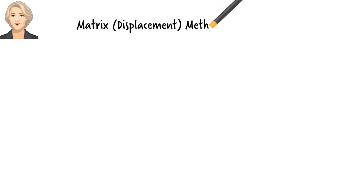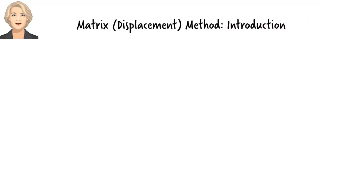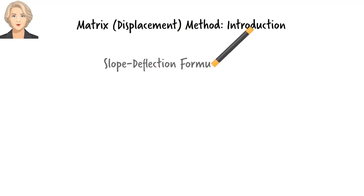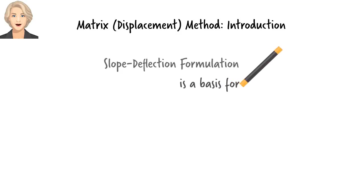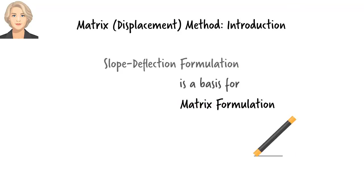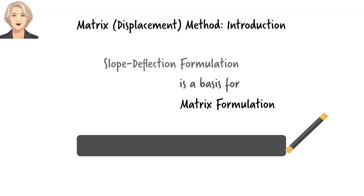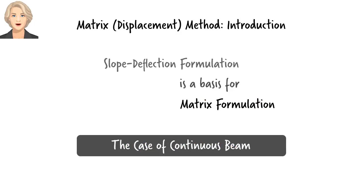This is an introductory lecture on the matrix-displacement method for analyzing statically indeterminate structures. Our point of departure is the slope-deflection formulation, as it forms a basis for the matrix method. Initially, we are going to limit our discussion to the analysis of continuous beams only, and we'll expand the formulation in future lectures for dealing with other types of structures.